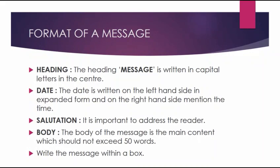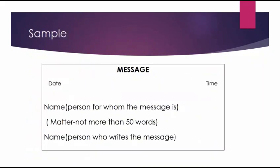Then you will write your name, because you have received the message. The entire message you enclose within a box. In the center, write the word MESSAGE in block letters, then leave a line. On the left hand side, mention the date in expanded form — not an abbreviation. On the right hand side corner, mention the time. Leave a line, then write the name of the person for whom the message is. The matter should not exceed 50 words. After that, leave a line and write the name of the person who writes the message. Enclose the entire thing in a box, drawn using a scale and a pencil.